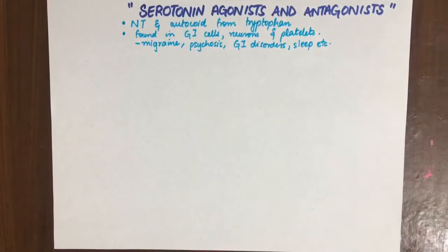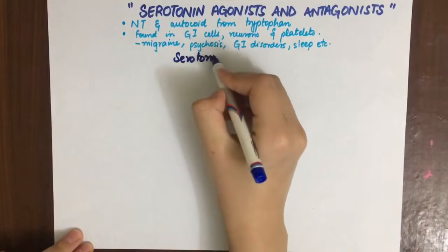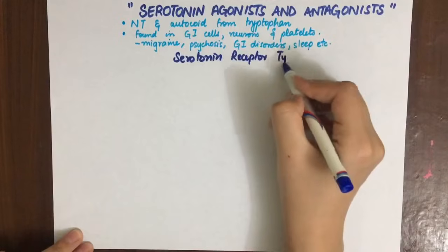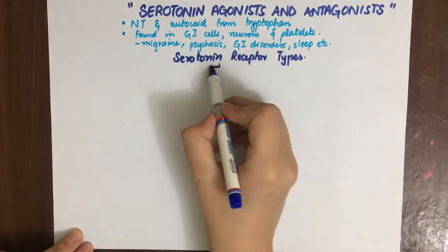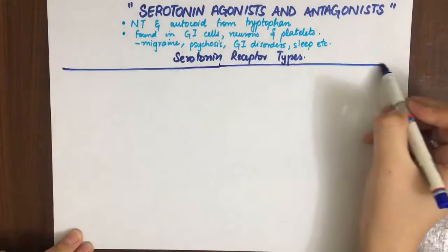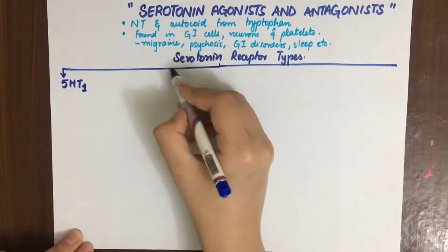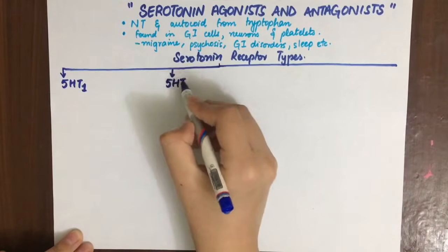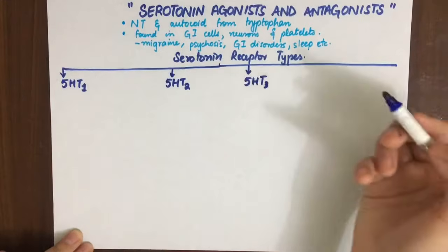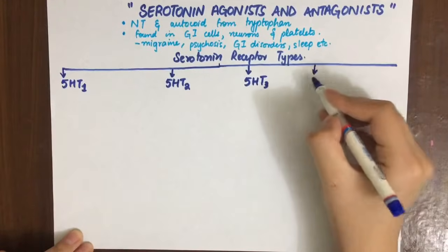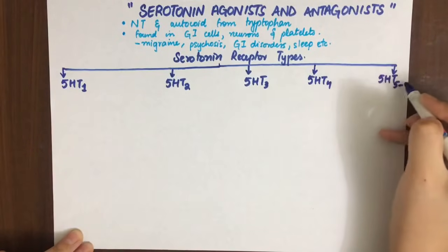Serotonin has seven major types of receptors. We'll talk about five of them here: 5-HT1, 5-HT2, 5-HT3, 5-HT4, and 5-HT5-7.